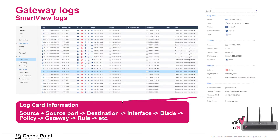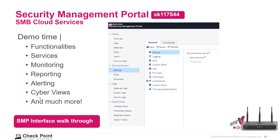The gateway logs show source, source port, destination, interface, security blade, the traffic policy, and gateway rule — all displayed in the SmartView logs. Clicking on one of the entries shows detailed output on the right for the highlighted and selected entry, providing all the information needed about a specific connection.